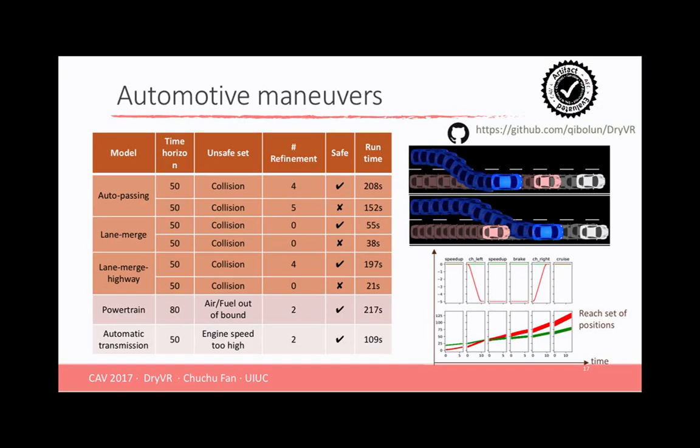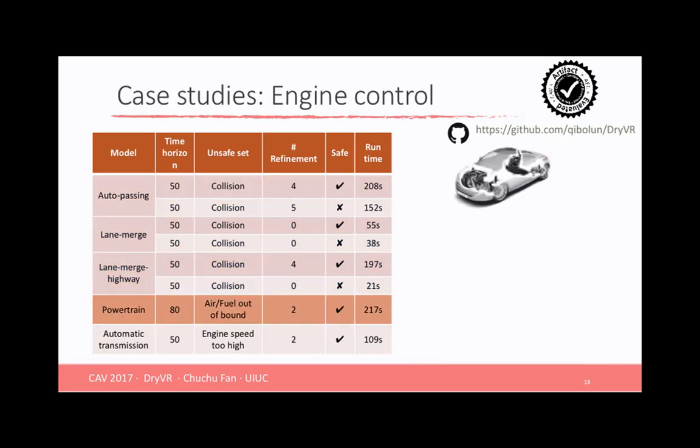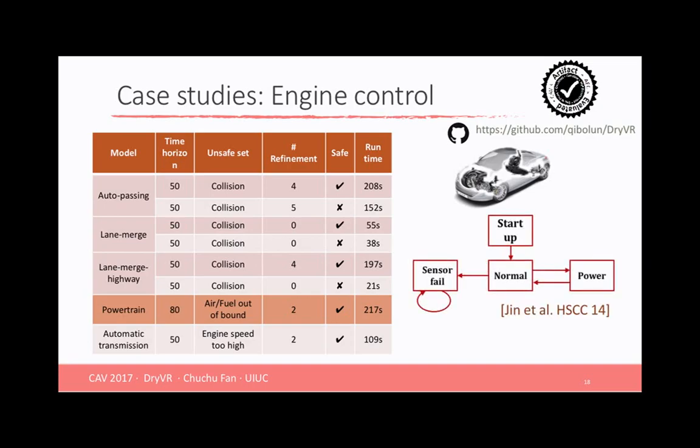We also applied it on the engine control system. This is a sequence of powertrain control systems proposed by the model design group from Toyota. It's like different powertrain control systems with different fidelity. But on the higher level, they all have four modes, including startup, normal, sensor fail. And the transition or the switch between these different modes is going to depend on time or user behavior. There is a simplest version of the powertrain control system that can be described using differential equation. We reported the verification of that one in our CAV 2015's work. Here, we are able to verify the safety of the second most complicated powertrain model. It cannot be described using differential equation, and we are treating it as a black box.